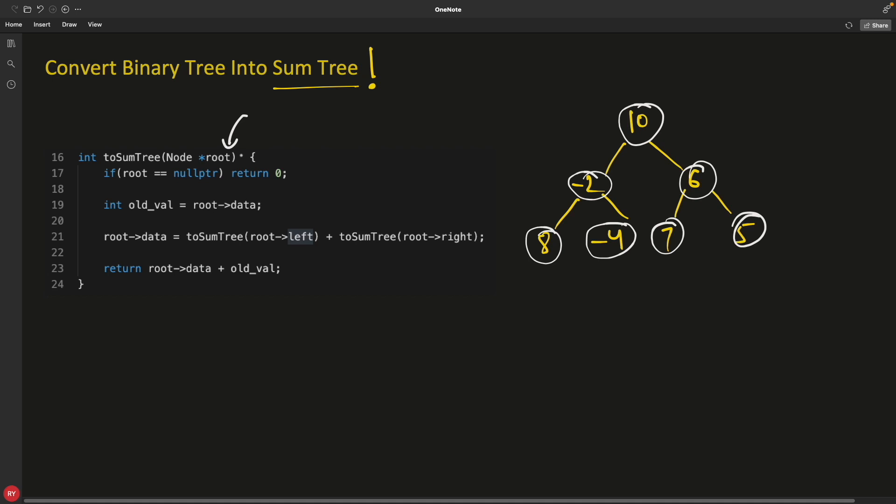So this is very simple code. We just pass the root here, which is 10 and we check if this is null pointer. We'll just return 0. So this is this 0, what we will get from here and here. I told you we will get 0 and 0. So this is that 0.